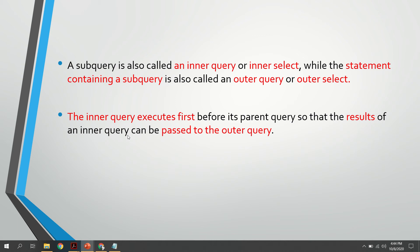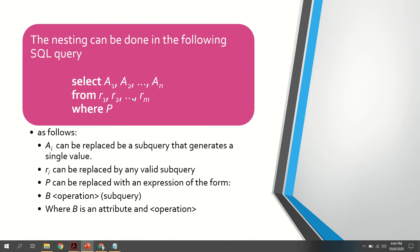If a SELECT statement consists of a subquery, initially the inner query will be evaluated first. Its value is given to the outer query, and based on that value the prescribed attributes will be listed. In a query statement, the SELECT clause specifies the attributes, the FROM clause specifies the relations, and the WHERE clause specifies any predicate or condition.